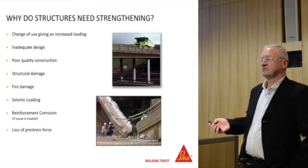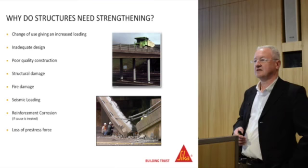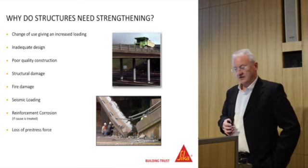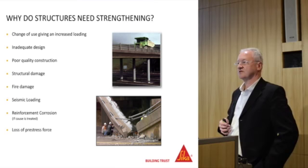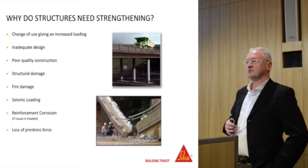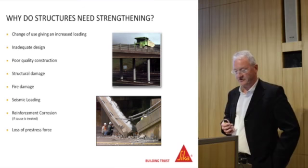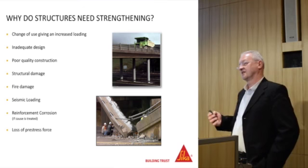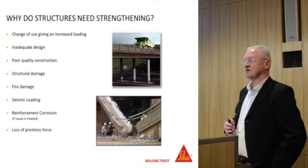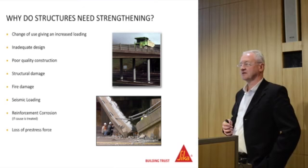Fabio will show you another way of doing it as regards to strengthening. Fire damage — structures do get damaged by fire, and if there's a problem with the steel there are ways to maintain the structural adequacy of that damaged element. Probably not too much of an issue here in the UK, but overseas a lot of countries have seismic issues. Reinforcement corrosion — we learned about that this morning. If you have loss of steel in the reinforcement, you've got to treat the cause before applying any structural strengthening. And there can be loss of pre-stress force in a structure as well.